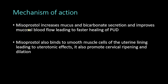Since misoprostol is a prostaglandin E1 analog, it also increases mucus and bicarbonate secretion in the stomach. Mucus works to protect the stomach from gastric acid, and bicarbonate works to neutralize the gastric acid — both effects treat peptic ulcer disease. Misoprostol also improves mucosal blood flow, leading to faster healing of peptic ulcer disease.